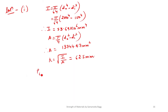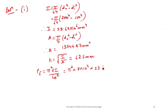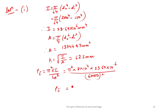Euler's load: PE = π²EI / LE² = π² into 8 into 10⁴ into 53.69 into 10⁶ / 6000², which gives PE = 1177.55 kN.